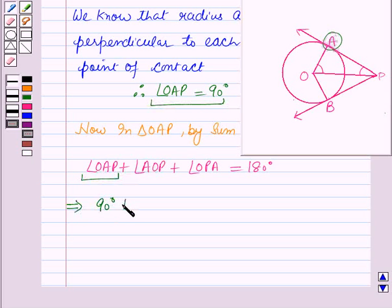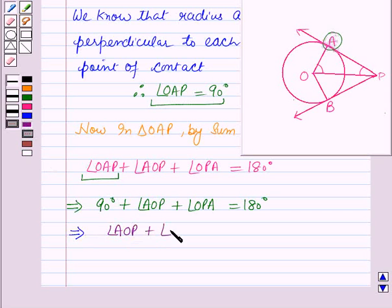we get 90 degrees plus angle AOP plus angle OPA equals 180 degrees, which implies angle AOP plus angle OPA equals 180 degrees minus 90 degrees, which is 90 degrees.